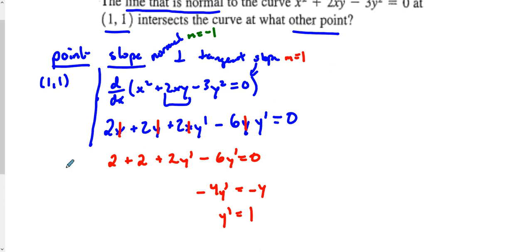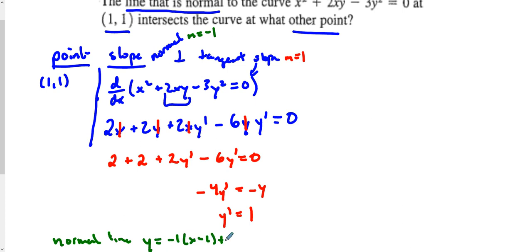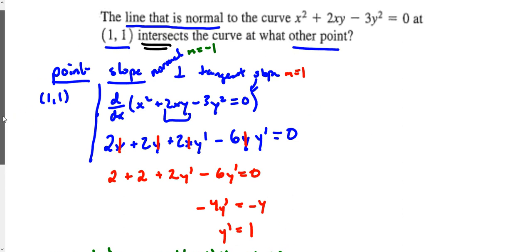So we have our normal line equation, which is y = −1(x − 1) + 1, which simplifies to y = −x + 2. Now from here, we need to find the intersection where this normal line y = −x + 2 intersects this curve.